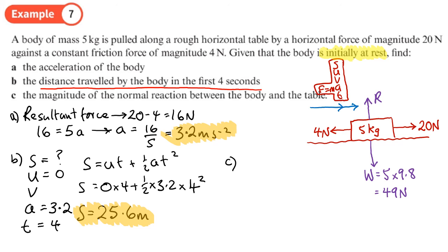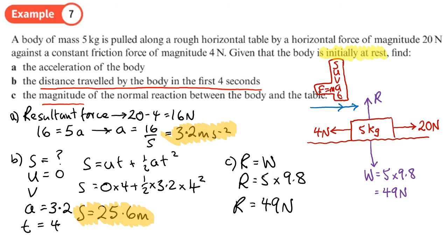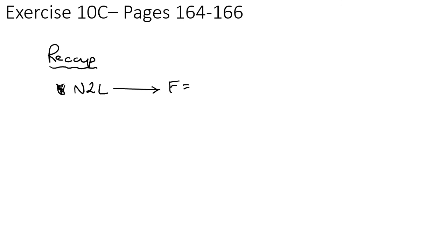Part c asks for the magnitude of the normal reaction between the body and the table. Since it's not accelerating vertically, R equals the weight, which is 5 times 9.8 equals 49 Newtons. We should now be able to do exercise 10c on pages 164 to 166. We've been looking at Newton's second law, which tells us that the resultant force acting on an object equals mass times acceleration.